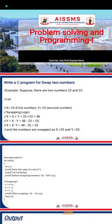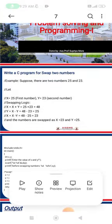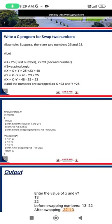After swapping, x is equal to 23 and y is equal to 25. So this is a simple and basic logic of C programming — how to swap two numbers. Now let's see the actual program.